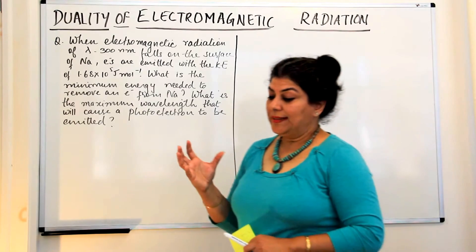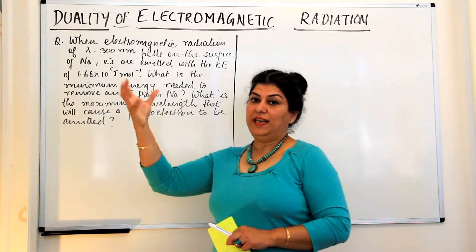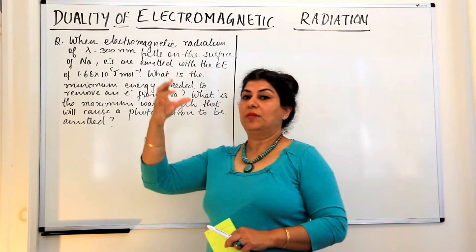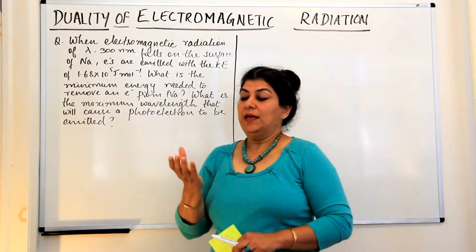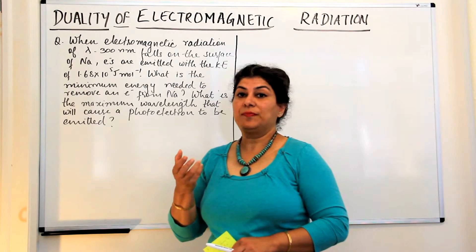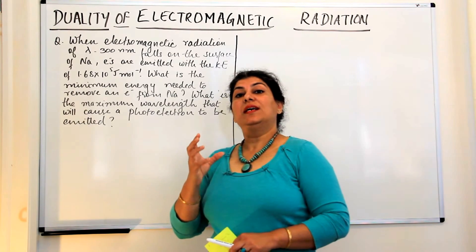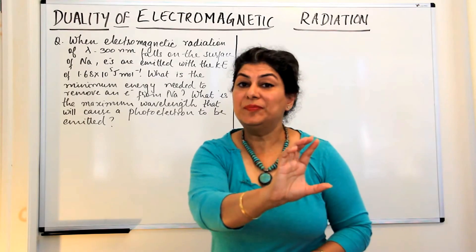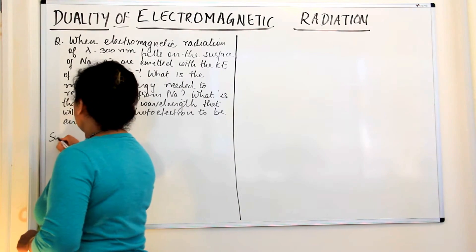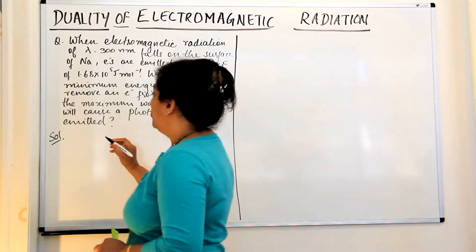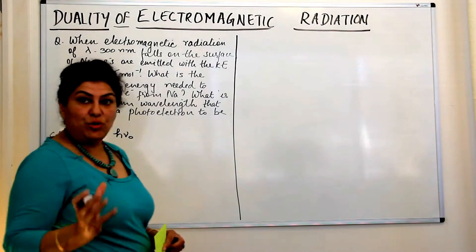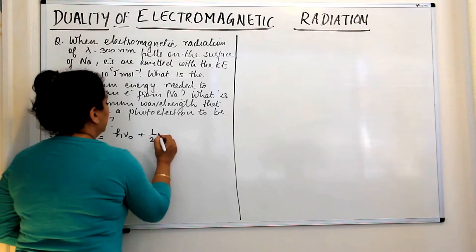When energy from light falls on a metal, the minimum energy — that is, the threshold energy — is used to remove the electron from the metal surface, and the remaining energy is used up as the kinetic energy of the photoelectron. So the formula we have is: energy given = hν₀ (the threshold energy) plus the kinetic energy.